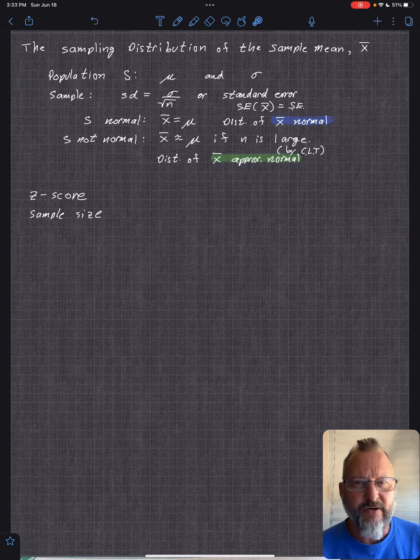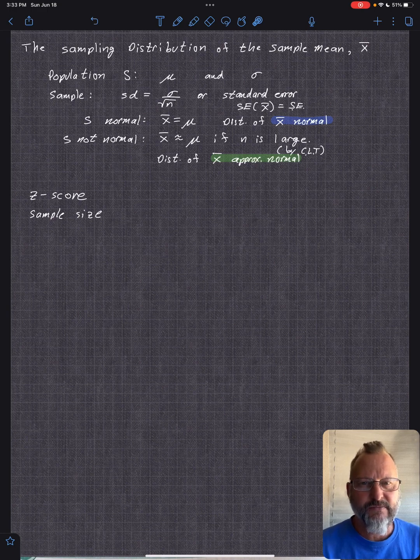The standard error approaches zero as n approaches infinity. So if you keep sampling forever, there isn't an error. It's exactly what the population is.